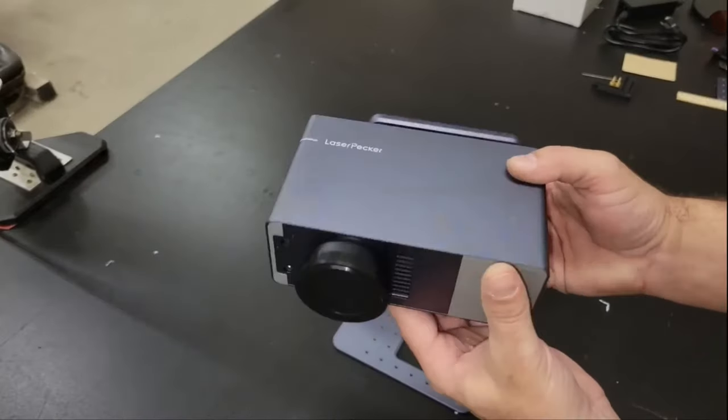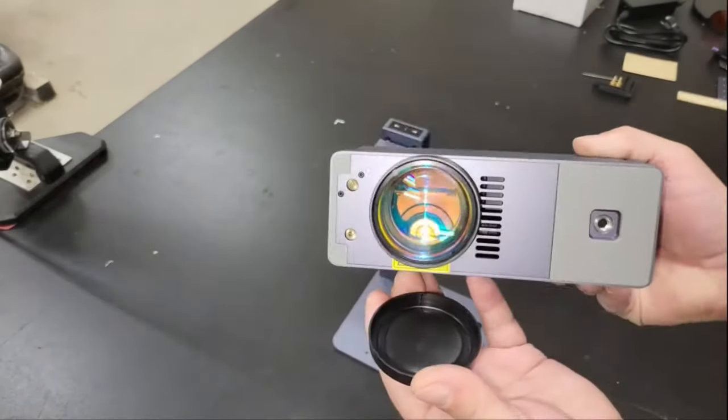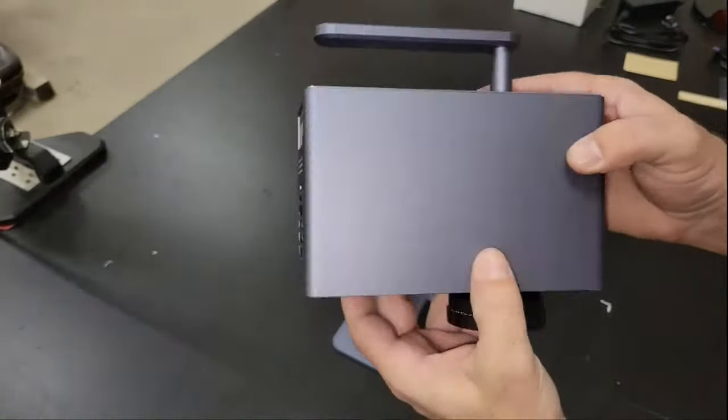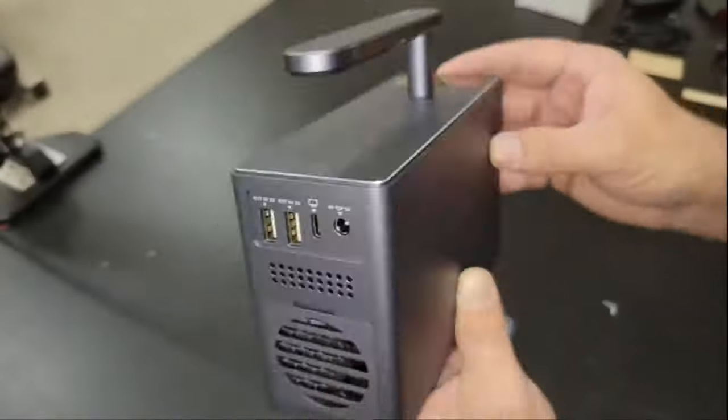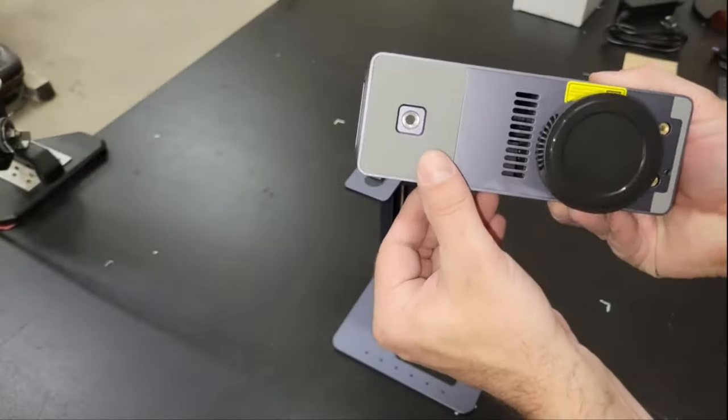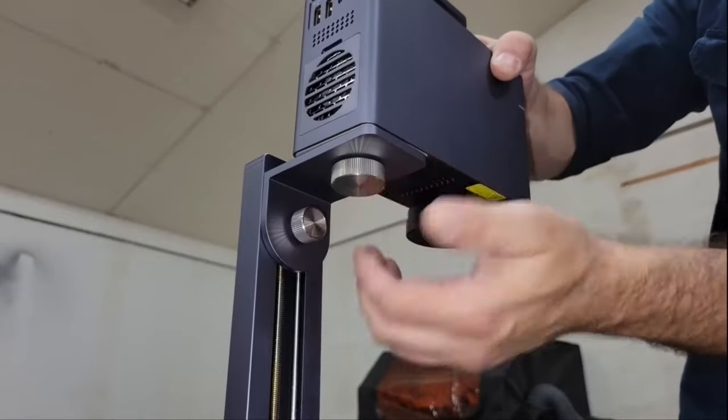The most noticeable is that the baseplate has a removable section. This allows for portable engraving of large objects because unlike the Laserpecker 2, this module stays attached to the electric stand during portable engraving because it doesn't come with a laser shield to maintain the focal point.